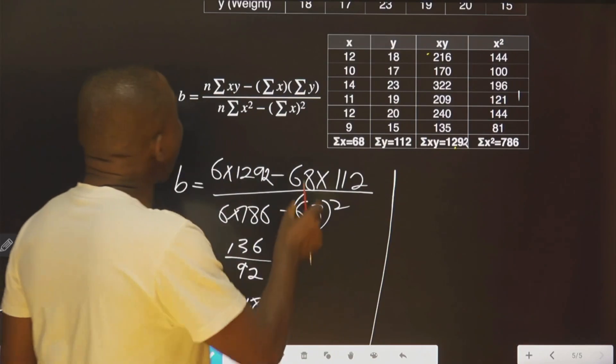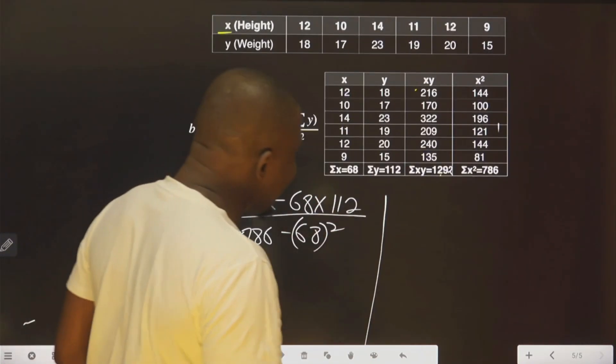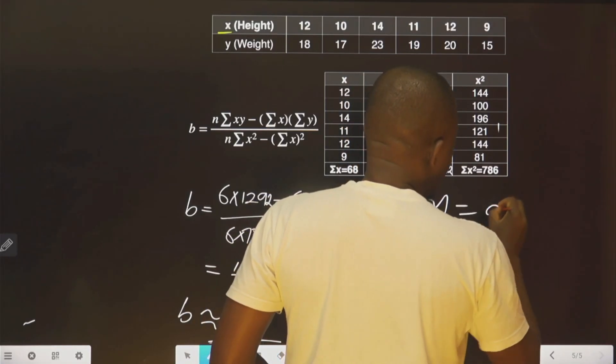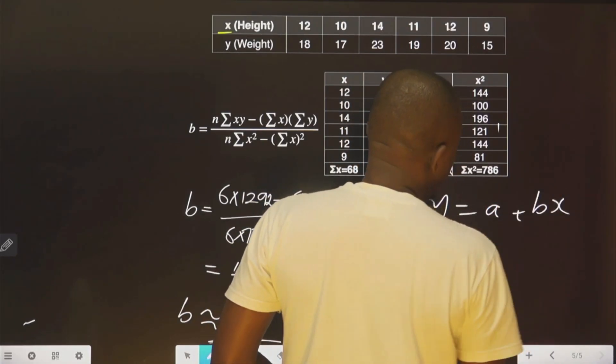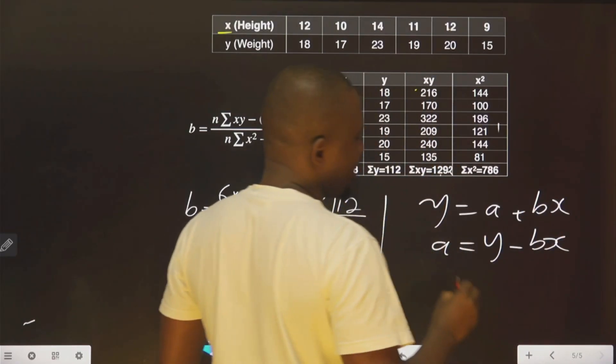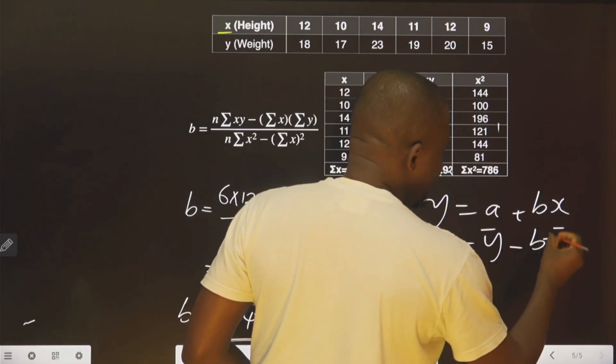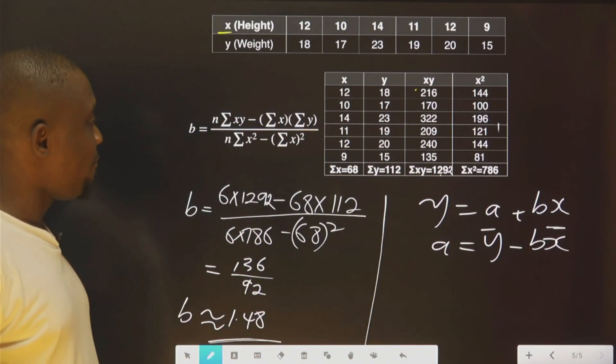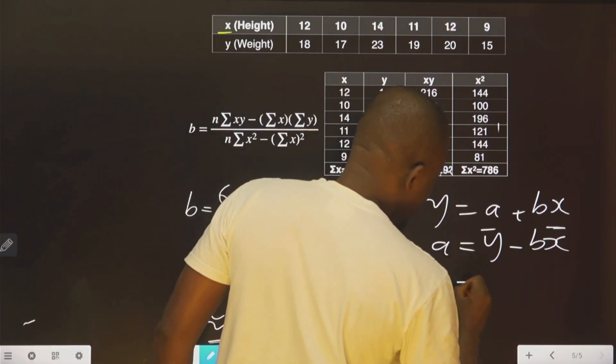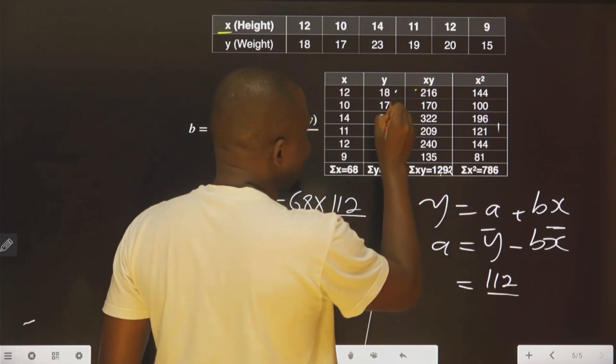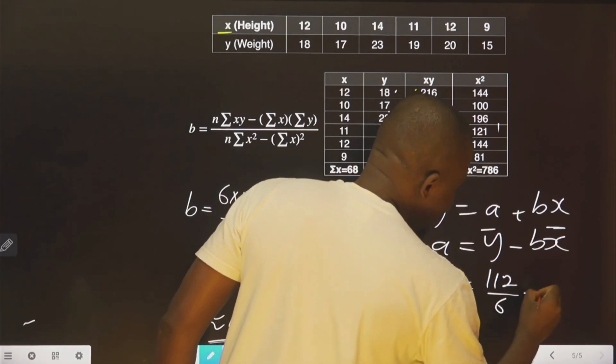To get our A, we've agreed that we have to get it from here, y equals A plus Bx. So A, therefore, is y minus Bx. And this is mean, this is mean. So we need to get this mean. That is the sum of y, that is 112, all over 6, because there are 6 in number. That is the mean.